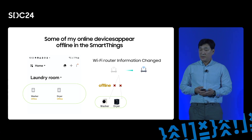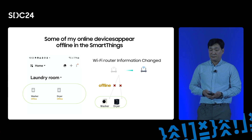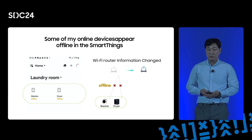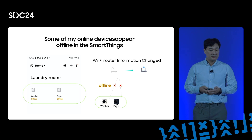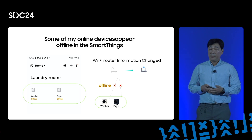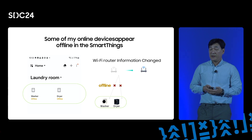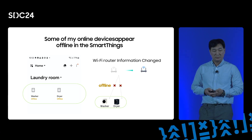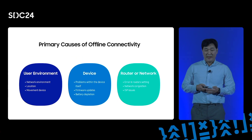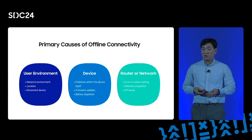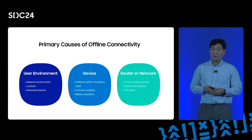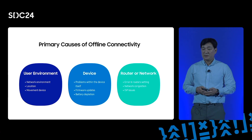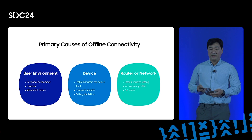However, there are some scenarios that may impact our user experience. For example, when a user moves or is changing their internet service provider, the Wi-Fi router information may change. This requires users to manually restore their connection using the Offline Diagnostic tool. Devices can go offline due to external factors such as the user's network environment, location, and the equipment they use — for example, moving to a new house, changing internet service provider, or changing the Wi-Fi password can impact device connectivity.